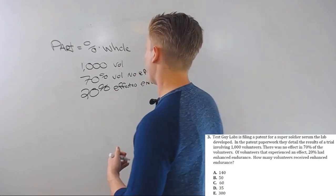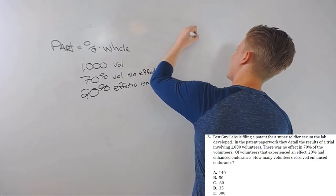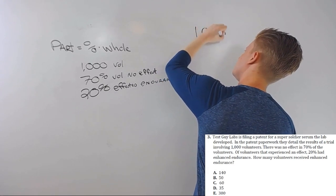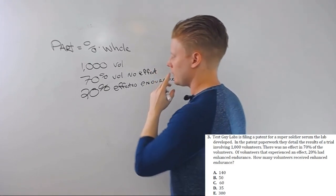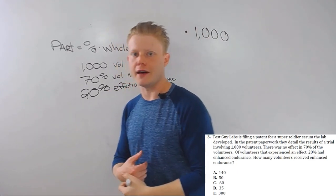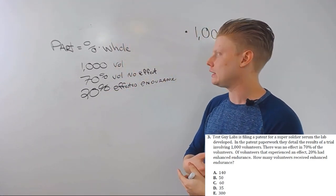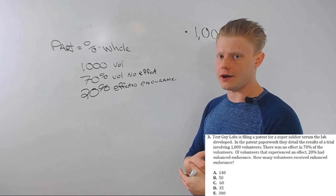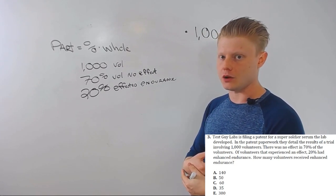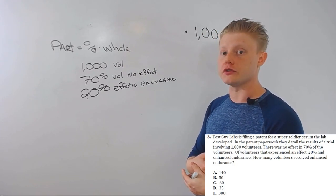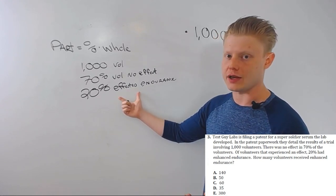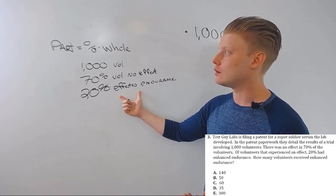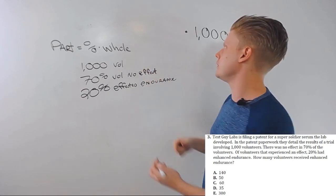To start with, we need to have a number, and the only number we have is 1,000 volunteers. That's before anything happens to them, so remember: before is whole. So 1,000 volunteers is our whole. Now here's our percent: 70% of the volunteers had no effect. We actually don't care about that 70%, we care about the 30% that were affected.